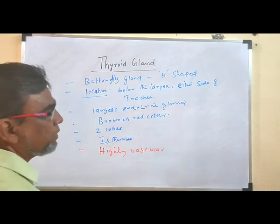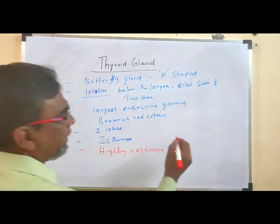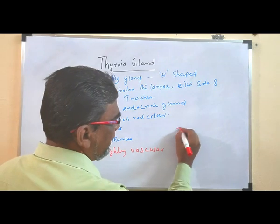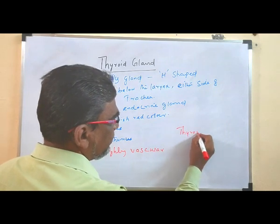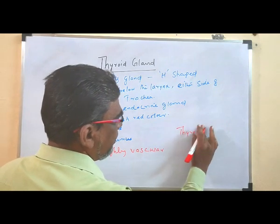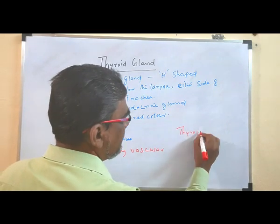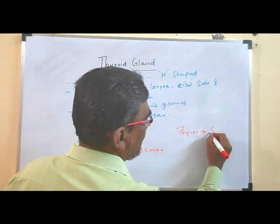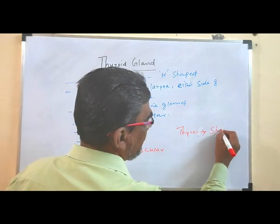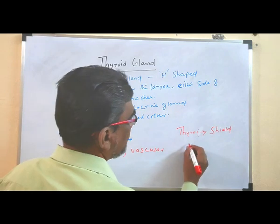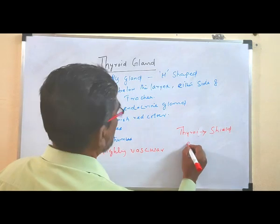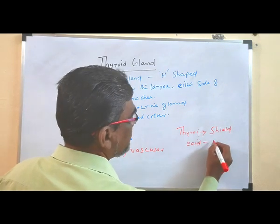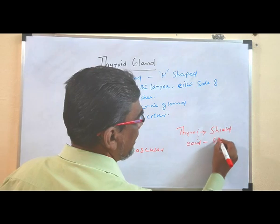In Greek, 'thyro' means shield, and 'oid' means shape — so the name 'thyroid' comes from the Greek word for shield-shaped.